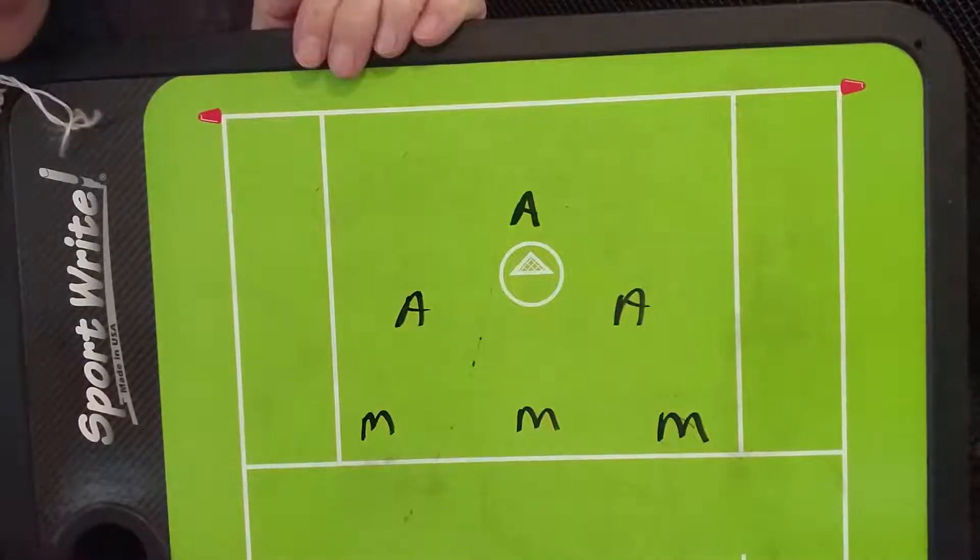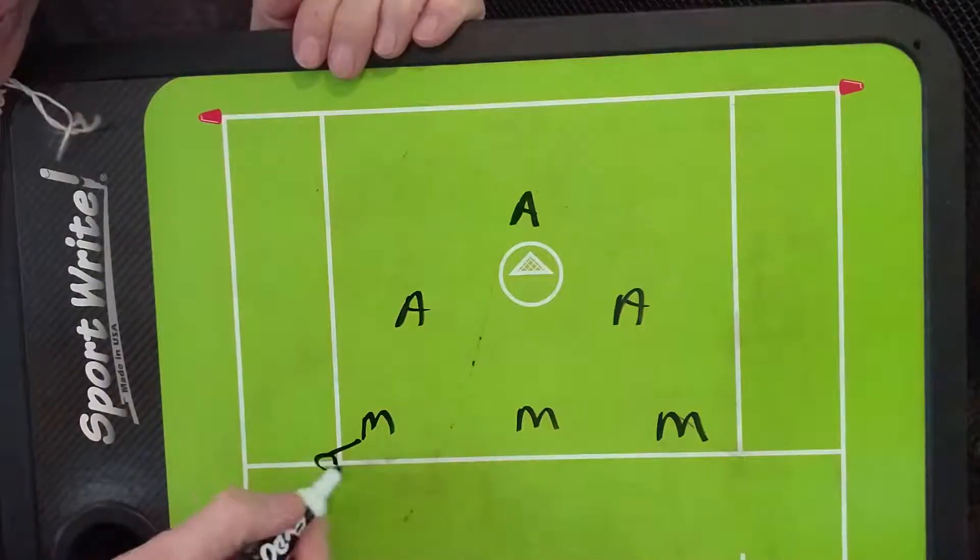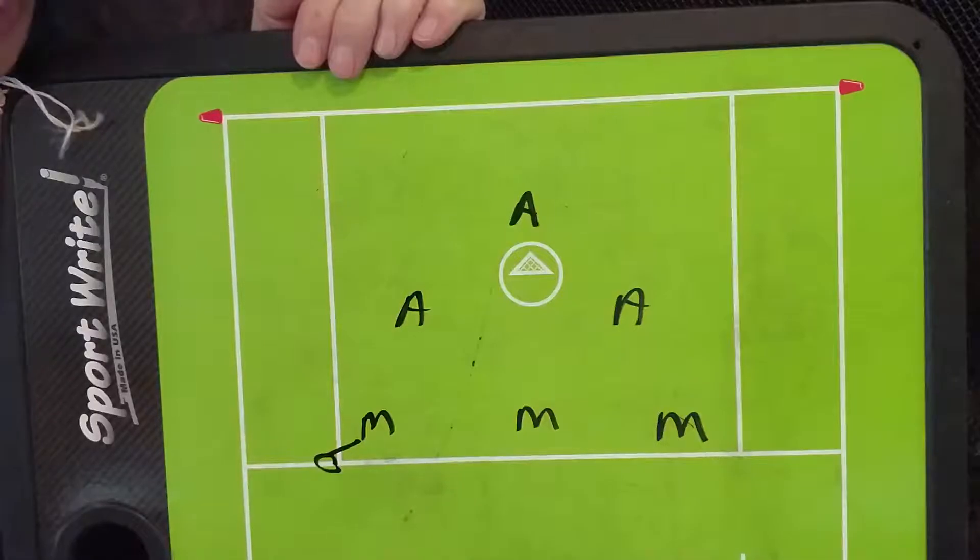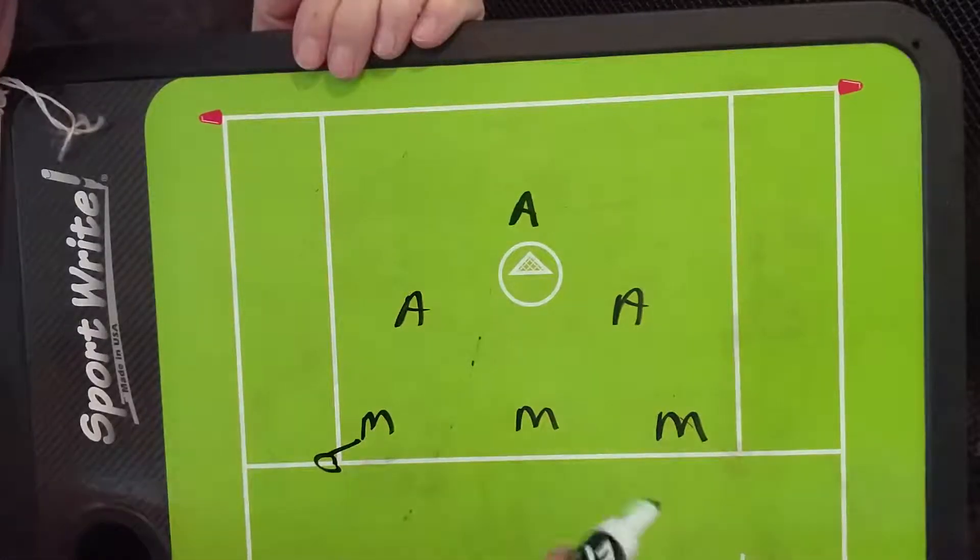This is our man-up play that we call 33. Basically, the ball's going to start up here with one of our midis, and this is how we're going to set up.